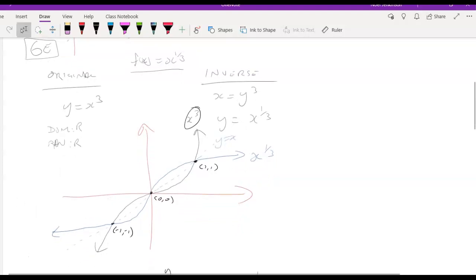On this graph here in black is the x cubed graph. That's this one here, the x cubed graph in black. You can see it going through 0,0, going through 1,1, and going through minus 1, minus 1. Domain and range are R for that x cubed graph.